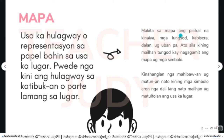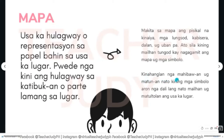Makita sa mapa ang pisikal na kinaiya, mga lungsod, kabisera or capital cities, dalan, o uban pa. Ato silang mailhan tungod kay nagagamit ang mapa o mga simbolo, so dako kaayog tabang ang mga simbolo sa mapa. Kinahanglan nga mahibauan o matunan nato kining mga simbolo aron nga dali lang nato mailhan o matultulan ang usa ka lugar.